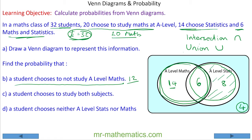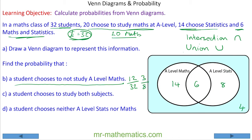That is 12 people out of 32, which simplifies to 3 over 8. The probability that a student chooses to study both subjects would be our intersection — 6 out of 32, divide both by 2 and you get 3 over 16. A student choosing neither A-level stats nor maths must fall outside of our union — that would be 4 people out of 32, which simplifies to 1 over 8.